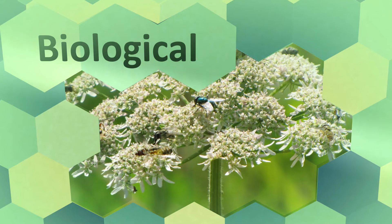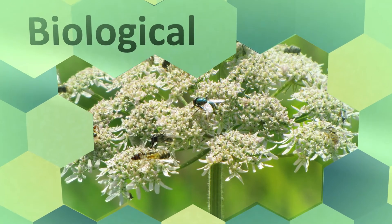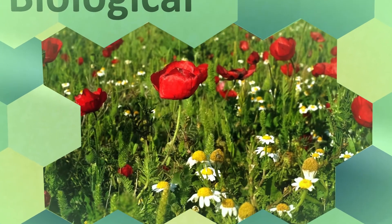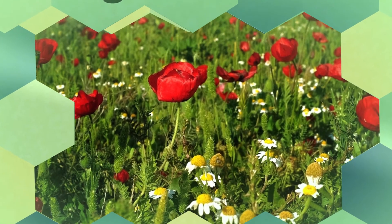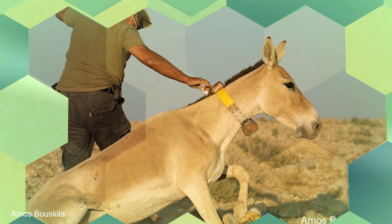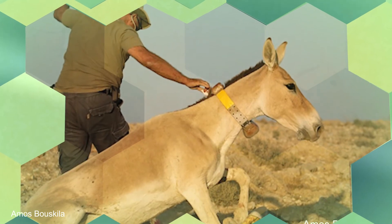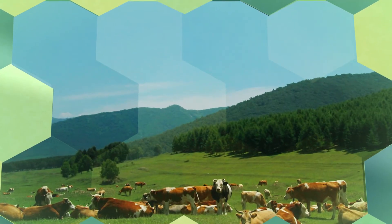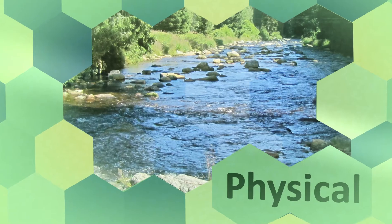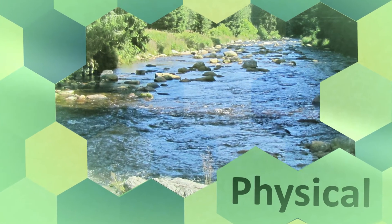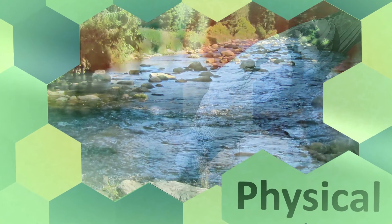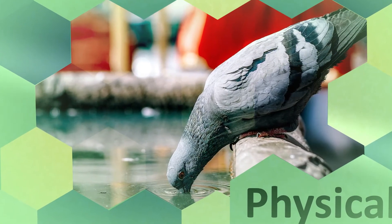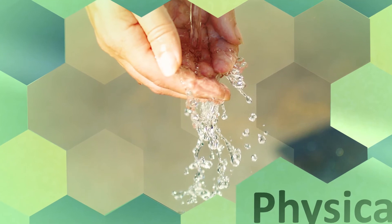The biological theme focuses on the importance of biodiversity and actions we can take to conserve basic ecosystem functions — for example, reintroducing locally extinct species and protecting agro ecosystems. Clean air and water resources, as elements of the physical theme, are crucial to maintain biodiversity and our basic life support systems.